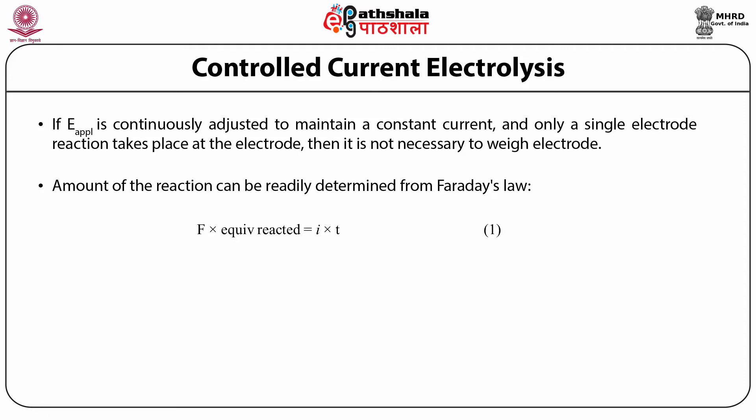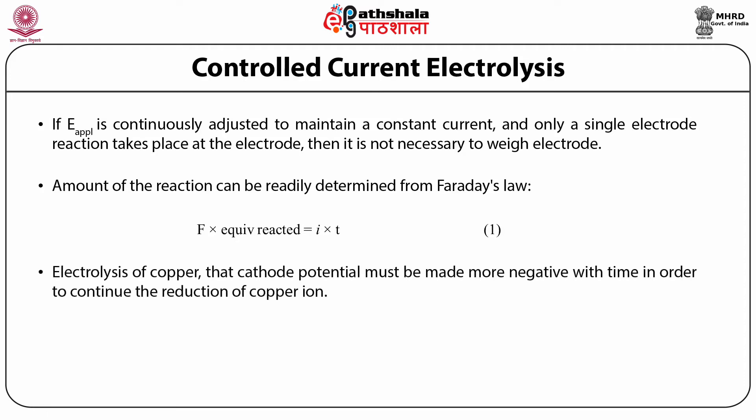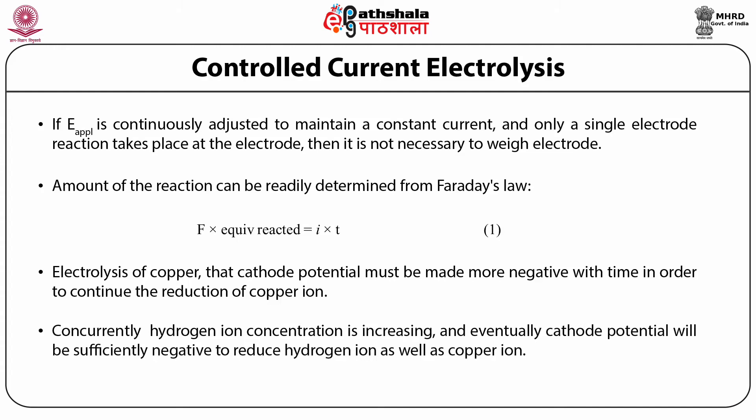As we have seen in the electrolysis of copper, the cathode potential must be made more negative with time to continue the reduction of copper ions. Concurrently, the hydrogen ion concentration is increasing, and eventually the cathode potential will be sufficiently negative to reduce hydrogen ions as well as copper ions. It is rarely possible to maintain a single electrode reaction, but this is the basis for coulometric titrations, which will be described here in detail.